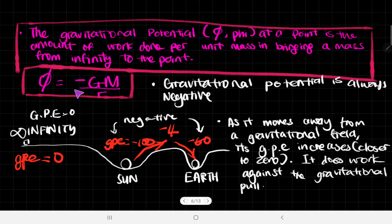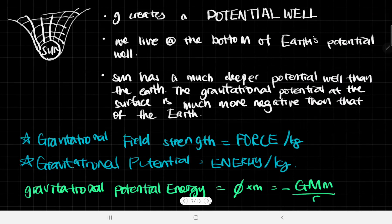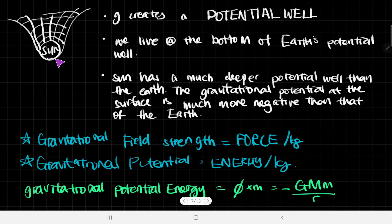Most importantly, phi equals negative GM divided by r. So previously we also talked about how a mass can bend space-time, and then it will create this sort of gravitational field, and that's why objects tend to accelerate towards other masses in space-time. From that, we can say that it creates something like this.